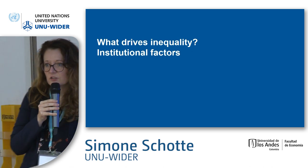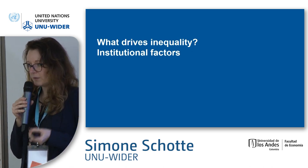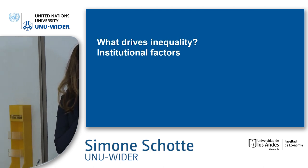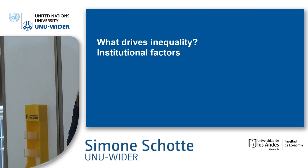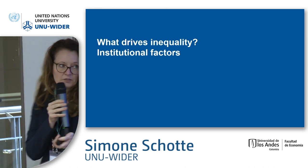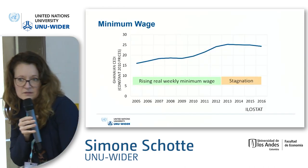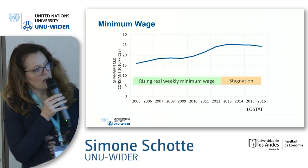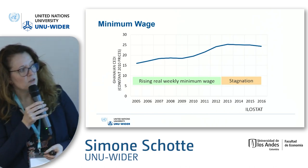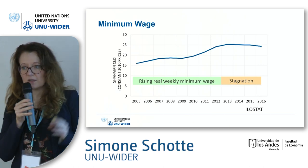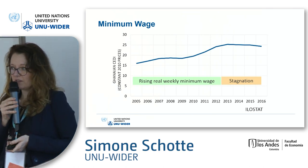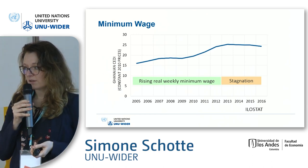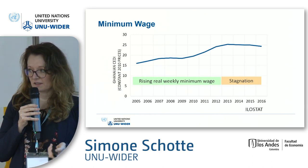As a last determinant — beyond education and occupational change — we look at institutional factors, mainly the minimum wage. For Ghana, we see an increase in the minimum wage more or less up to 2012, which is the period where we observed declining inequality, and then a stagnation in the minimum wage during the period where we saw increasing inequality.